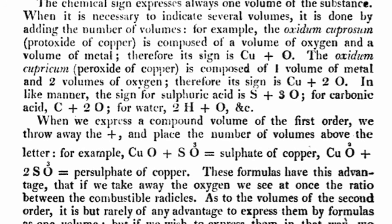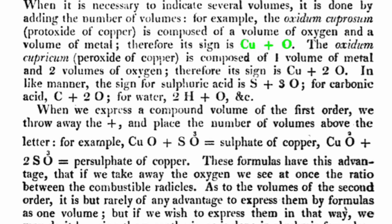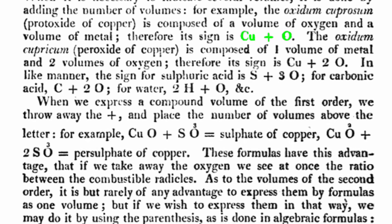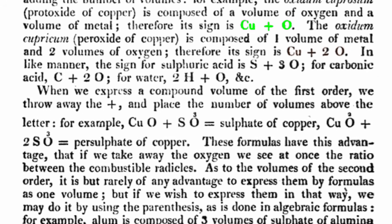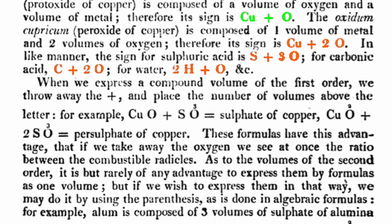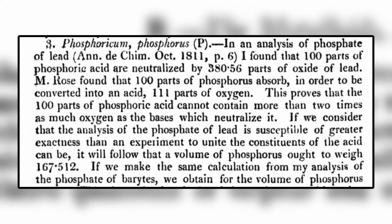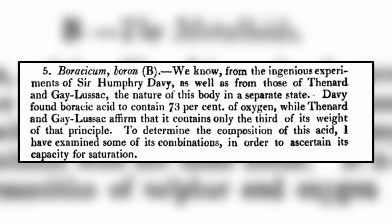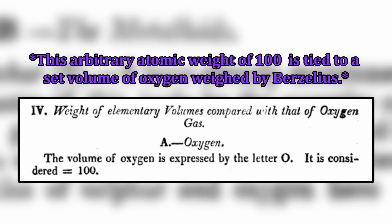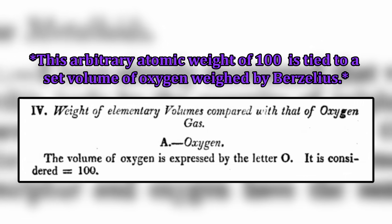Berzelius then moves on to discuss notation for molecules, giving each molecule the symbols of its elements combined with a plus sign. If a molecule is known to have more than one of a specific element, then a number is placed in front of the element of which there are multiple. After setting his notation, Berzelius moves through each known element individually, describing its notation and its weight. He starts with oxygen, giving it an arbitrary atomic weight of 100, and bases the relative weights of all other elements around this arbitrary weight.